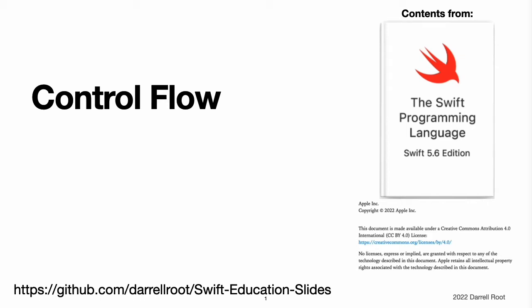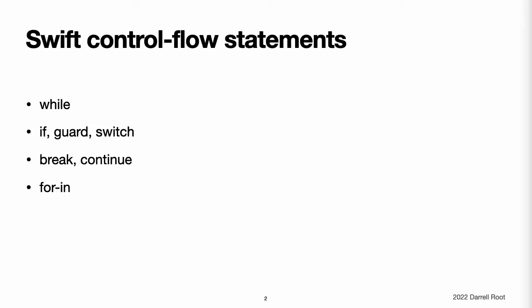Control Flow. Swift provides a variety of control flow statements. These include while loops to perform a task multiple times, if, guard, and switch statements to execute different branches of code based on certain conditions, and statements such as break and continue to transfer the flow of execution to another point in your code.